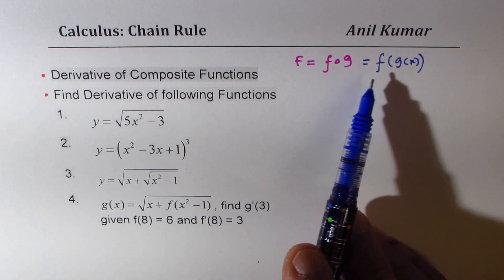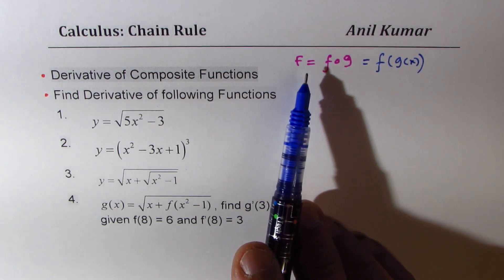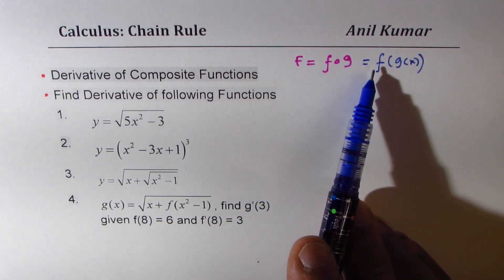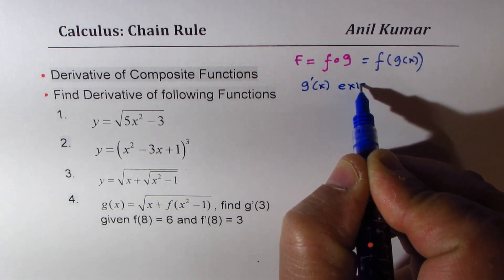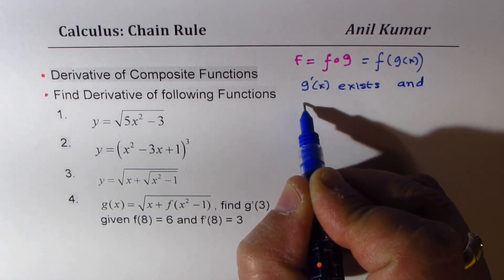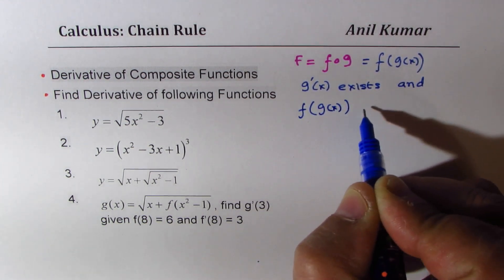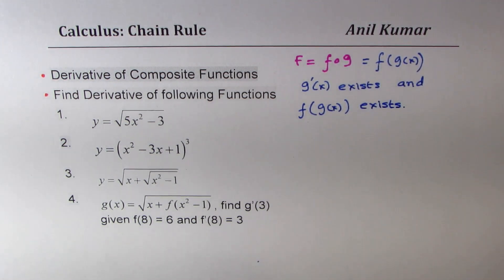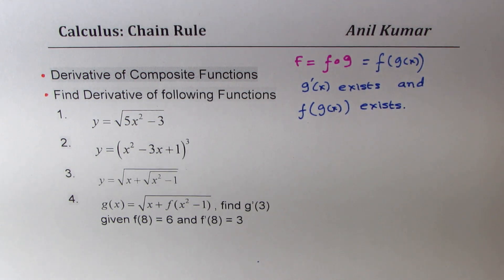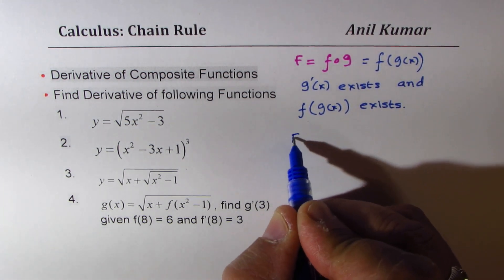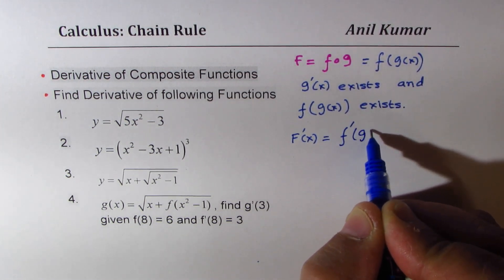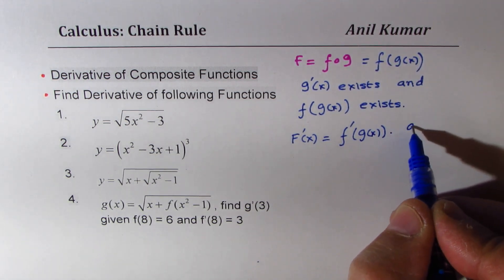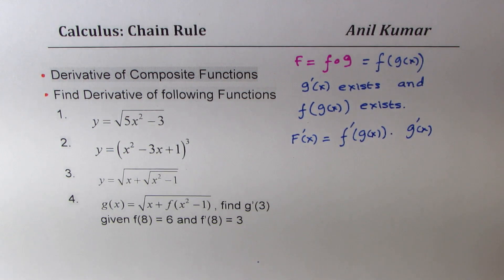We can get the derivative of the composite function capital F only if the derivatives of the inside function and the outside function are defined. So if g'(x) exists and if f'(g(x)) exists, only in that particular domain will we get the derivative. The derivative of this function will equal the derivative of the outside function times g'(x), the derivative of the inside function. That is how the derivative of composite functions is defined.